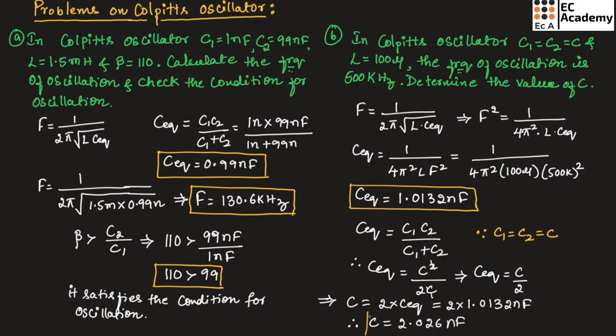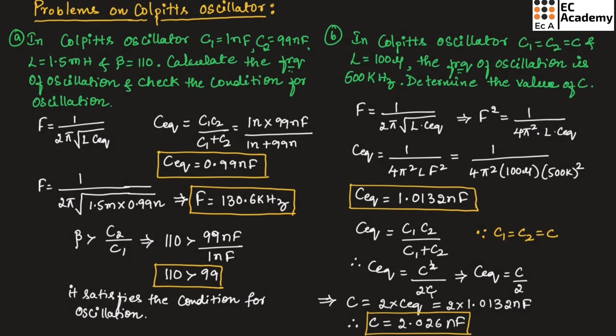This is the value of C. This is about problems on Colpitt's oscillator. Hope you have understood the topic. Thank you.